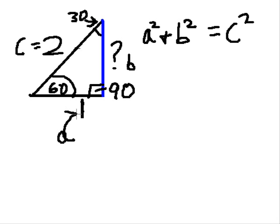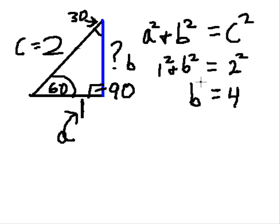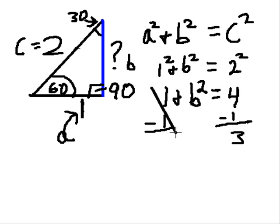Okay, now let's fill in what we know. A is 1, so that's 1 squared, plus b squared, and c is 2, so we'll put 2 squared. Two squared is 4, one squared is 1, so I got 1 plus b squared equals 4. I'm gonna subtract 1 from here and 1 from there. I get a 3 over here.